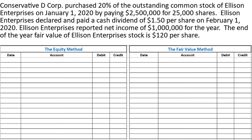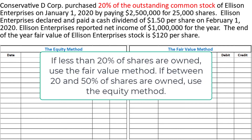Let's look at an example to show what the journal entries used under the equity method look like. Conservative D Corporation purchased 20 percent of the outstanding common stock of Ellison Enterprises on January 1st, 2020 by paying 2.5 million dollars for 25,000 shares. Notice that 20 percent of the outstanding stock of Ellison Enterprises was purchased, which is right at the cutoff point between using the equity method and the fair value method, so we will prepare the journal entries in both ways to see the differences.